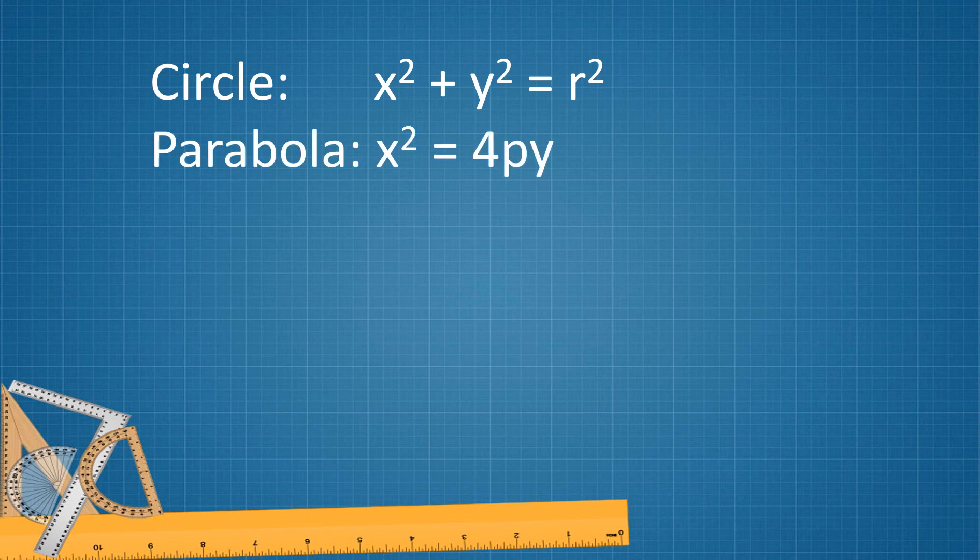Next is parabola. Parabola has a standard form of x squared equals 4py or y squared equals 4px. If it is x squared equals 4py, then the parabola opens upward. But if it is x squared equals negative 4py, then the parabola opens downward. On the other hand, if the equation is y squared equals 4px, then the parabola opens to the right. However, if it is y squared equals negative 4px, then the parabola opens to the left.